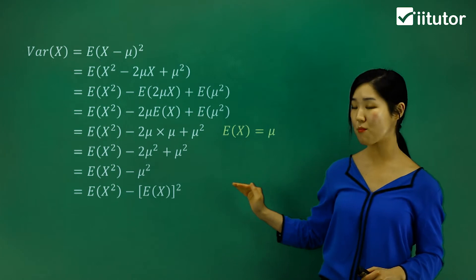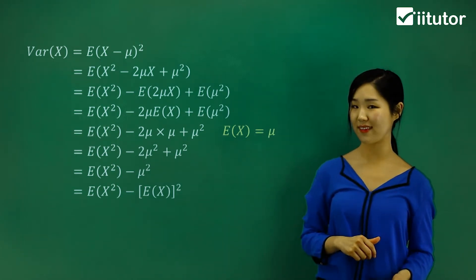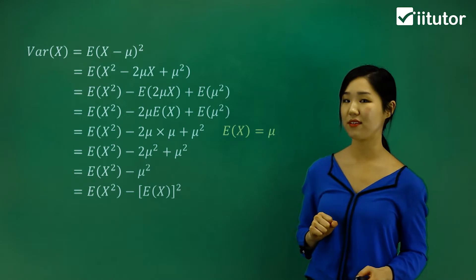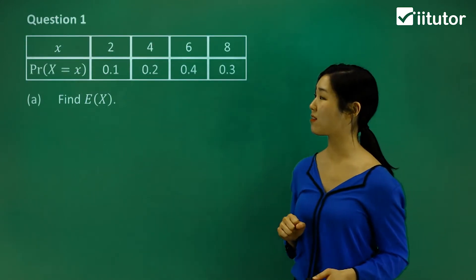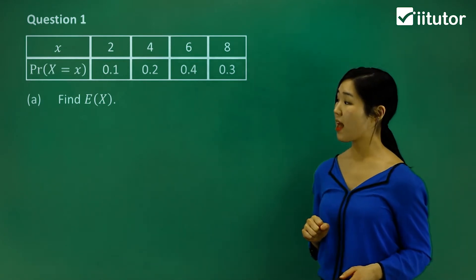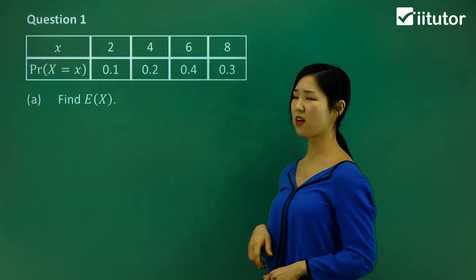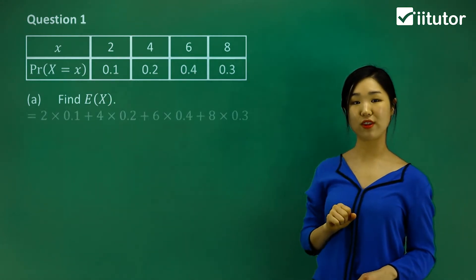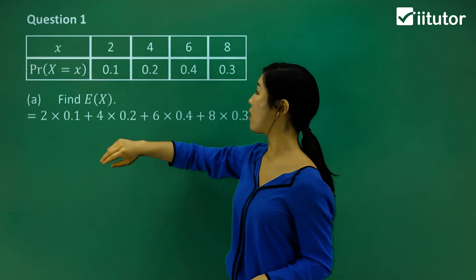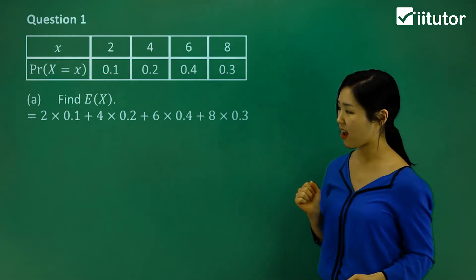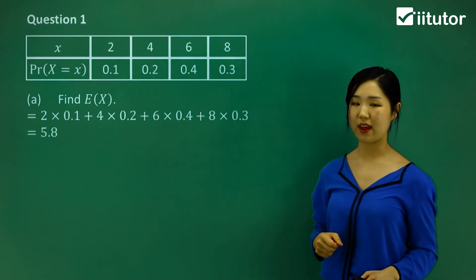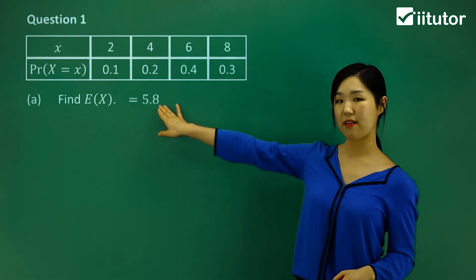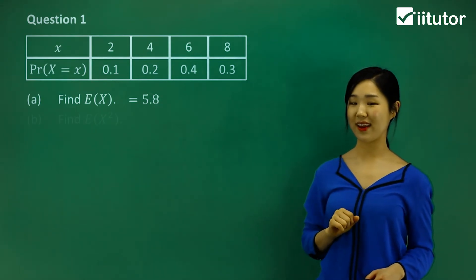This is something you must remember, and then we'll use that to do some questions involving variance. Try to write that down and derive it yourself so you understand. Now let's try some questions — we'll start with question one. They give us a probability distribution table, and what we're going to do first is calculate the expected value. We multiply each variable by its probability and add them all together, giving an expected value of 5.8.